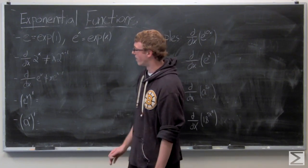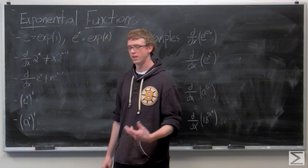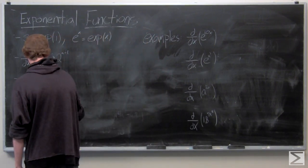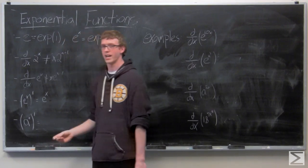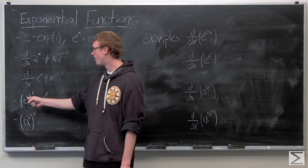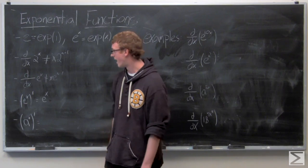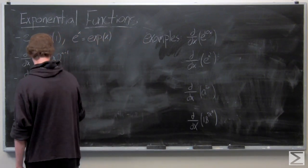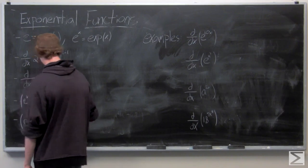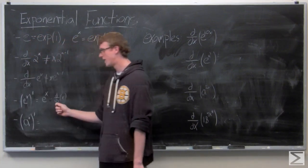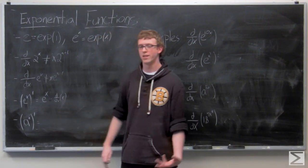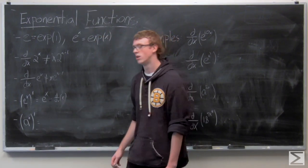The derivative of e to the x — and this is just with a single x in the exponent — is e to the x, multiplied by the derivative of that exponent. In this case it's just 1, so we don't multiply that function by anything, but keep in mind this is sort of like using the chain rule.